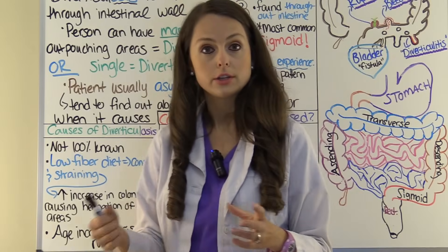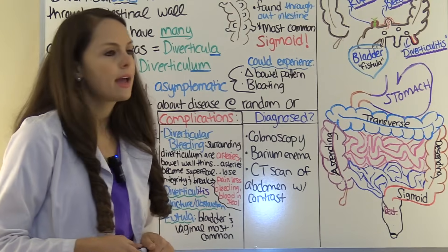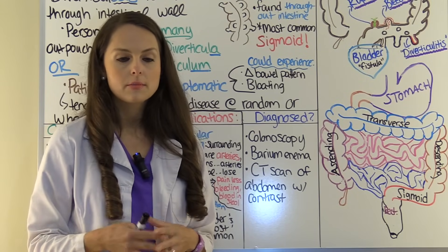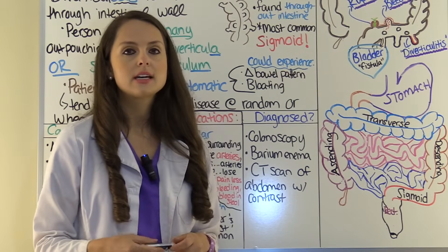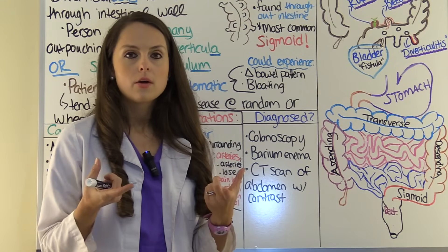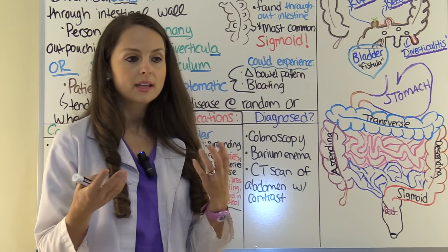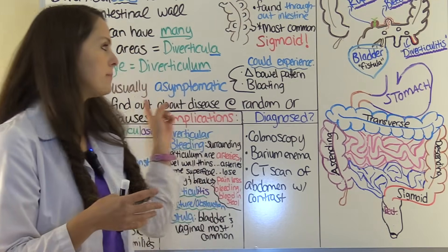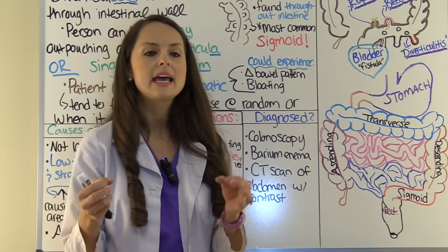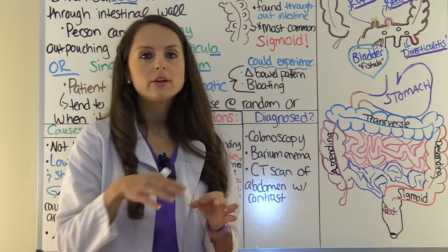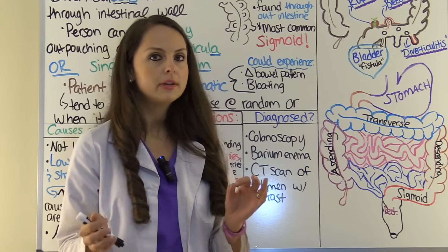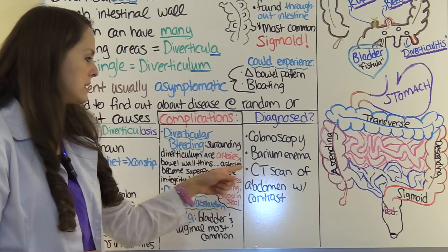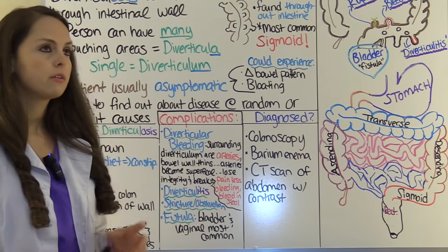How do they diagnose diverticulosis? One way is through a colonoscopy, where they use a scope to go in and look. If you're taking care of a patient who goes for one, the physician will often upload pictures taken with the scope. Inside areas with diverticula, instead of being nice, smooth, and pink, there will be dark, crater-looking areas throughout the intestine — very unique looking, and once you see it you'll never forget it. They can also use a barium enema or a CT scan of the abdomen with contrast.